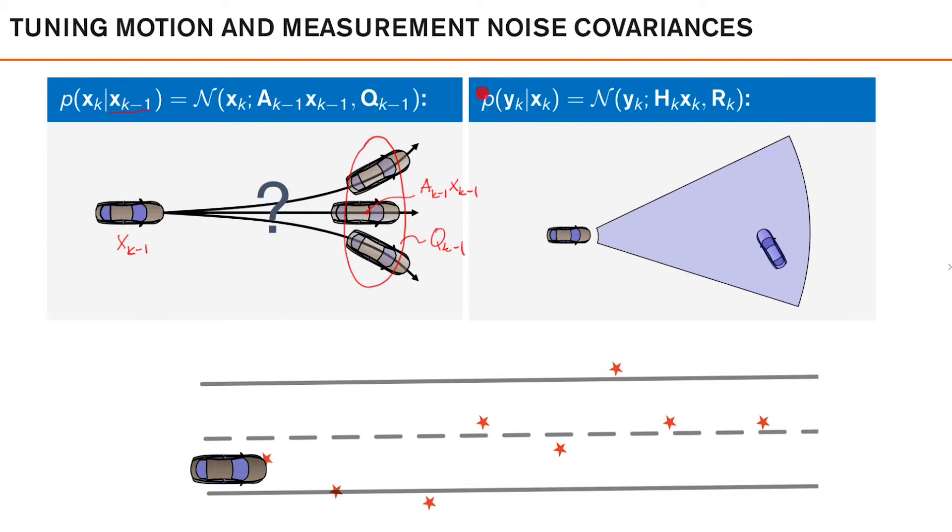The measurement model, on the other hand, we want to describe the stochastic relation between the state at the current time and the current observation, yk.